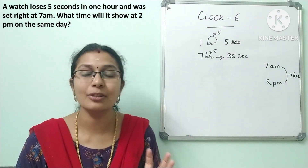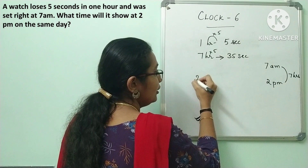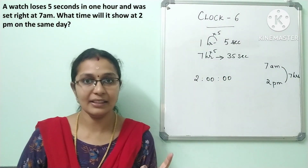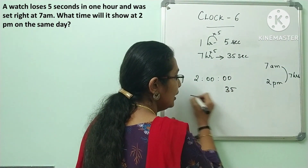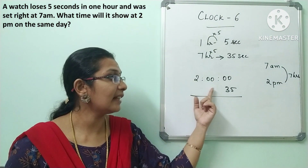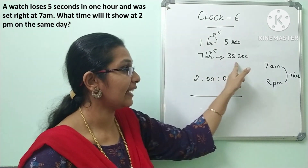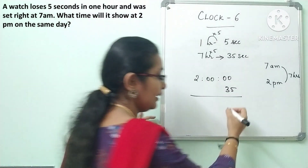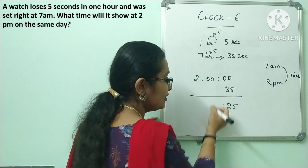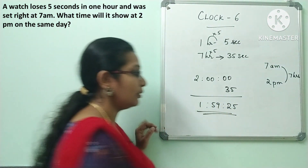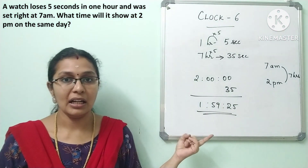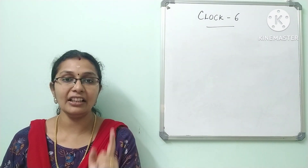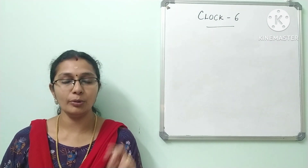So 7 hours into 5 seconds is 35 seconds total loss. Actually the time at 2 pm — 35 seconds are lost. You can convert this: 35 seconds. In the previous question the answer for 2 o'clock time would be 1 hour, 59 minutes, 25 seconds.